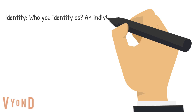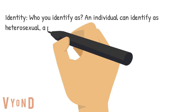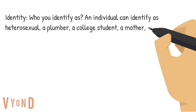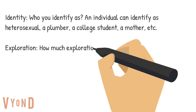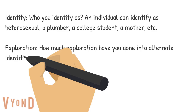Some terms to know. First is identity — identity is just who you identify as. An individual can identify as a homosexual, as a plumber, which is an occupation, as a college student, or as a relationship role like a mother or a son.